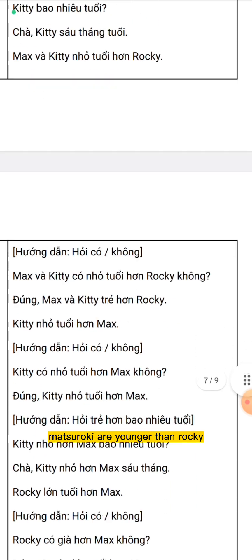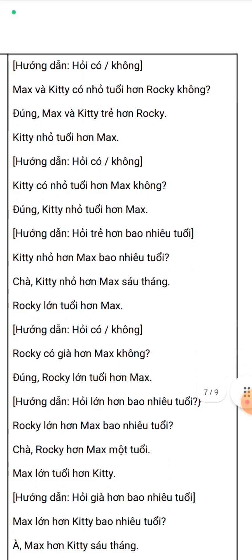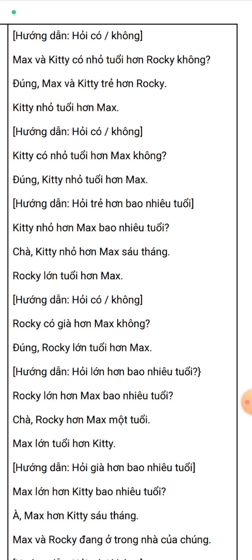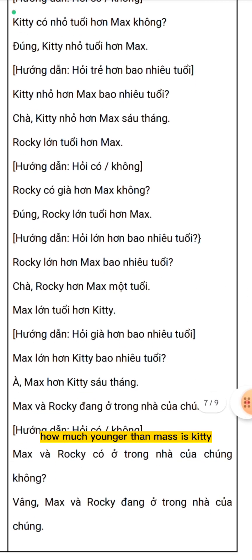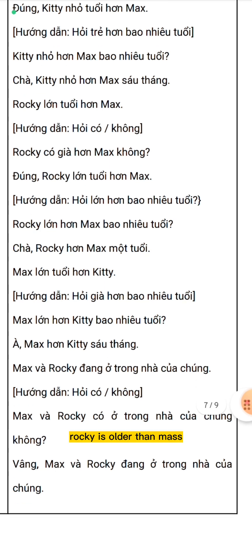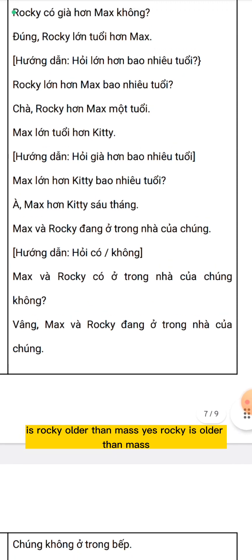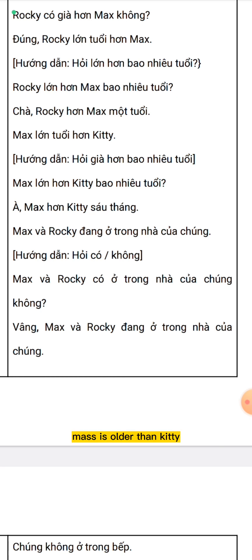Masaroki are younger than Rocky. Are Masaroki younger than Rocky? Yes, Masaroki are younger than Rocky. Kitty is younger than Mars. Is Kitty younger than Mars? Yes, Kitty is younger than Mars. How much younger than Mars is Kitty? Well, Kitty is 6 months younger than Mars. Rocky is older than Mars. Is Rocky older than Mars? Yes, Rocky is older than Mars. How much older than Mars is Rocky? Well, Rocky is 1 year older than Mars. How much older than Kitty is Max? Well, Max is 6 months older than Kitty.